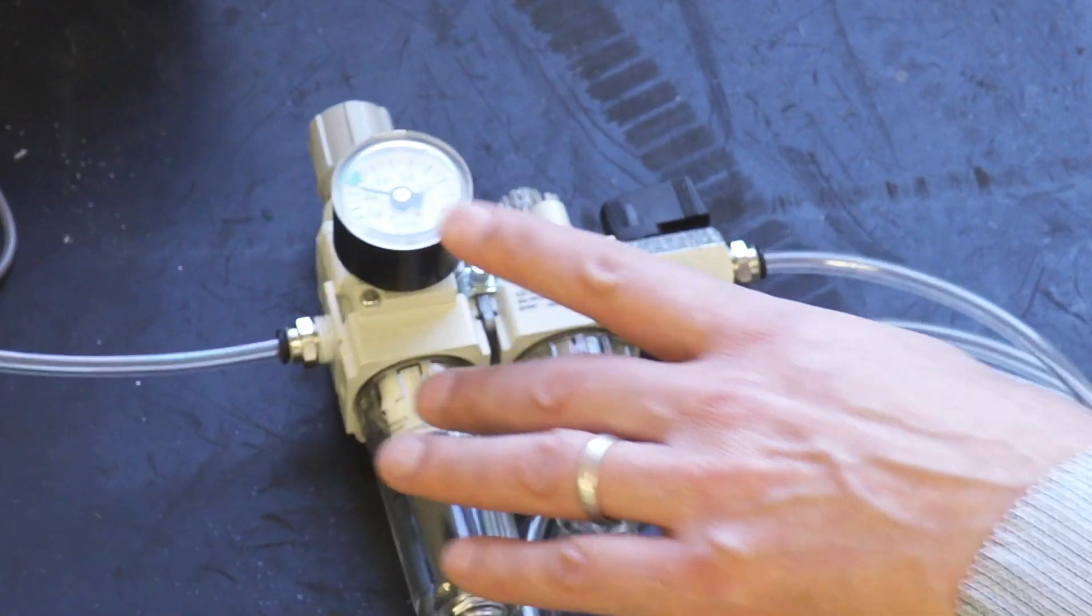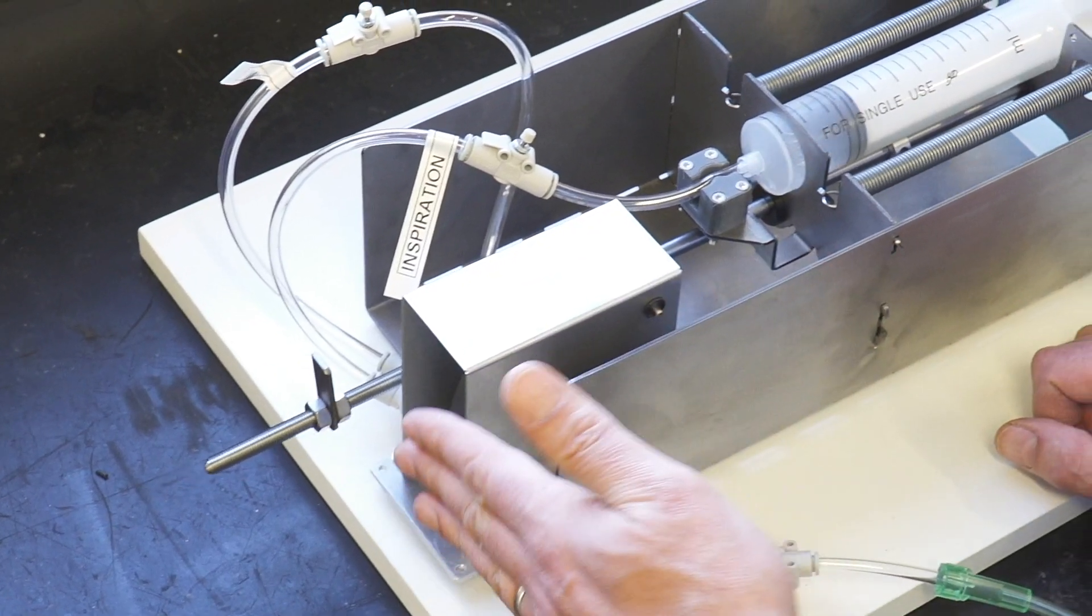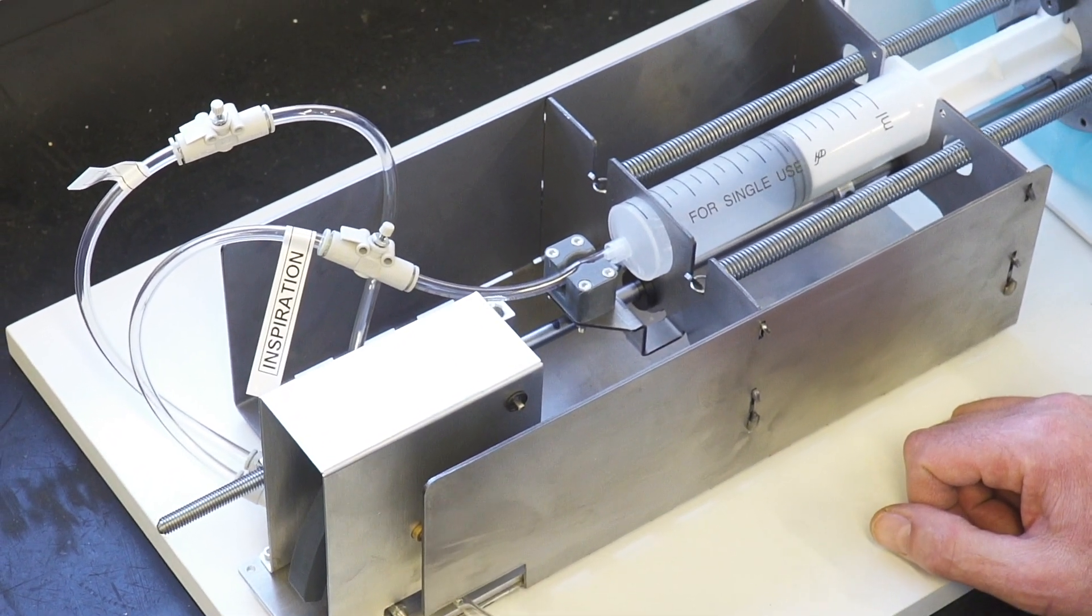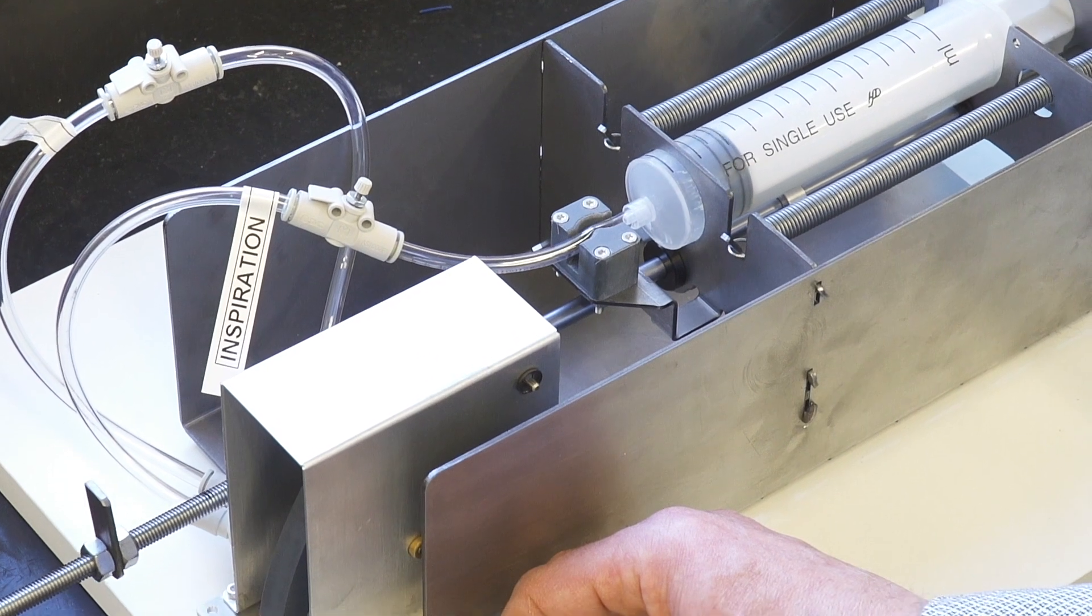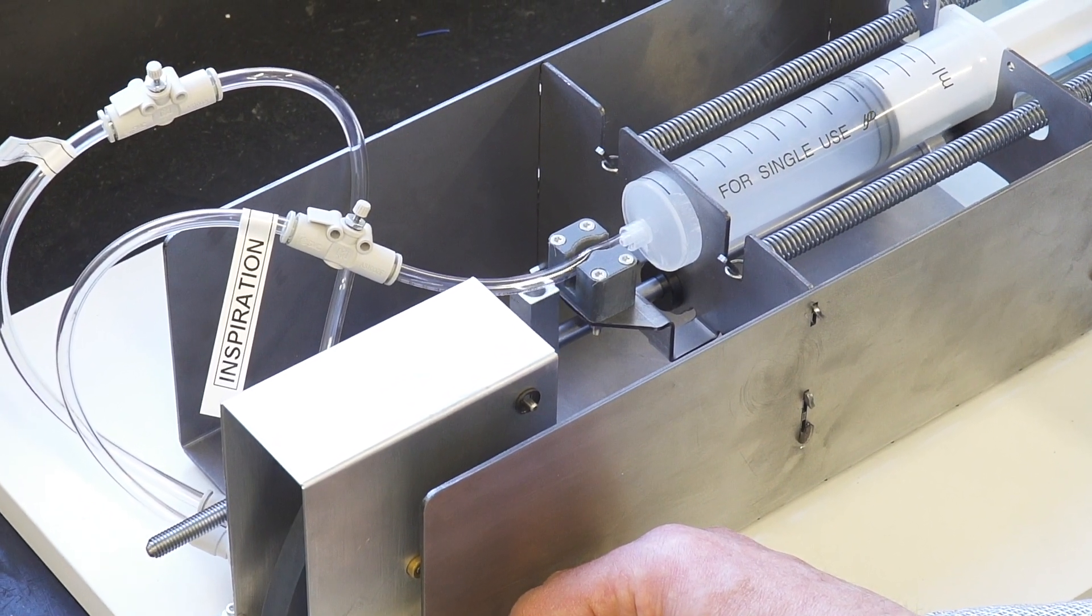Now the first thing that we do is we set a constant pressure. We're running this at 0.2 millipascals. We've set these stops for a stroke of around about 80 millilitres.